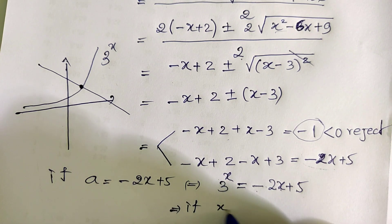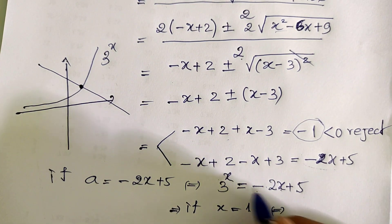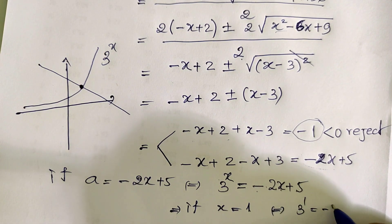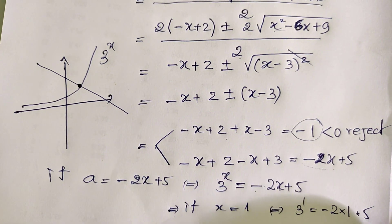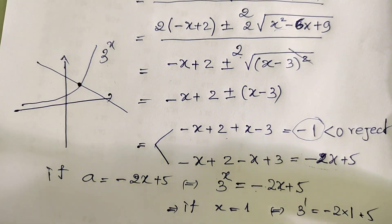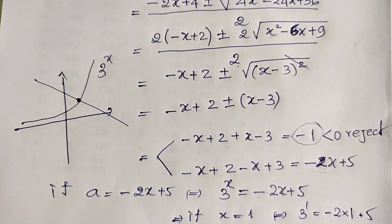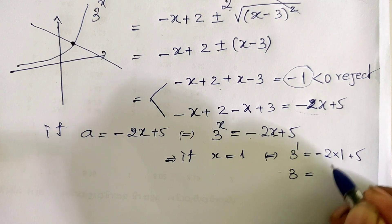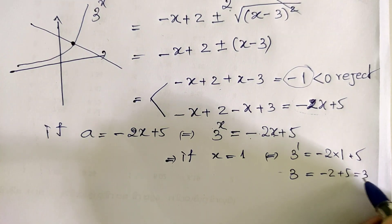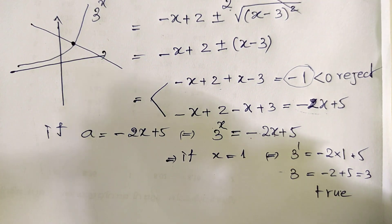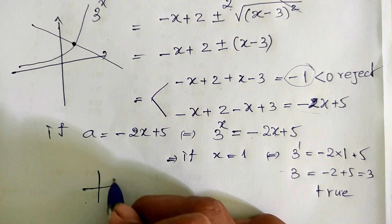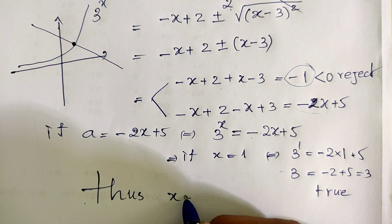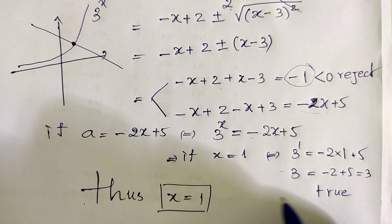If x equals 1, we get 3 to the power 1 equals minus 2 times 1 plus 5. This gives 3 equals minus 2 plus 5, which equals 3. It's true. So x equals 1 is our solution.